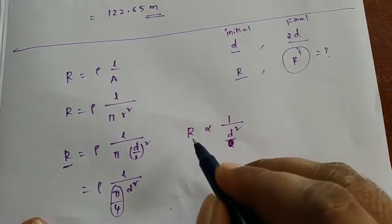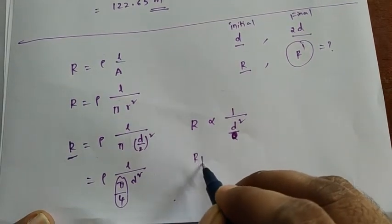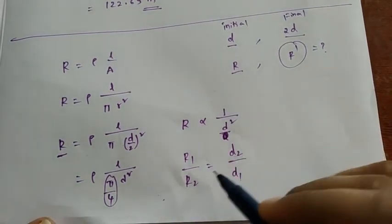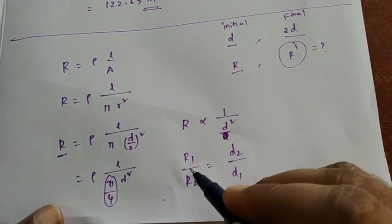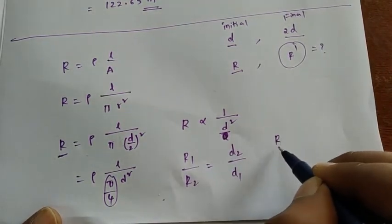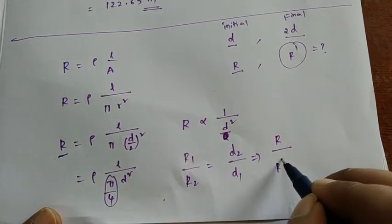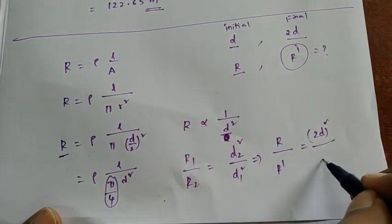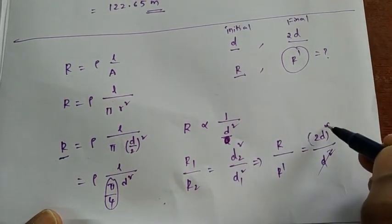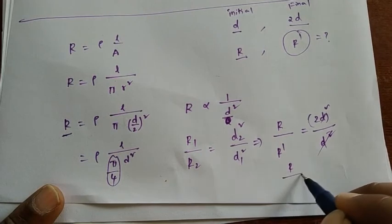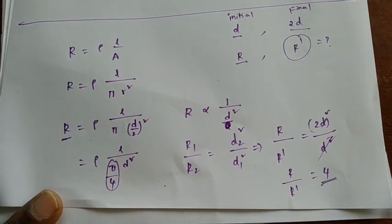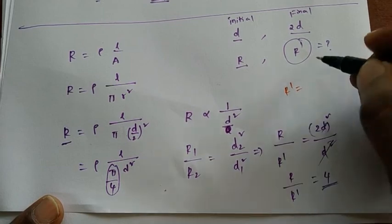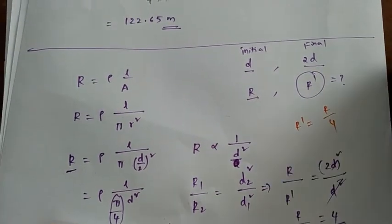Using the proportionality, R₁/R₂ = (d₂/d₁)². So R/R' = (2d/d)² = 4. Therefore R/R' = 4, which gives R' = R/4. The new resistance is reduced by four times.